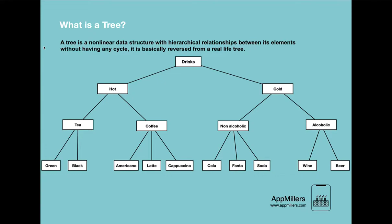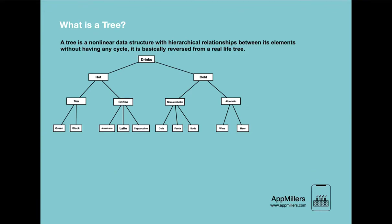Now let's see the common properties and observations from this diagram. The first property is that it's used to represent data in hierarchical form — every time we go one step down it becomes a more specialized form of its parent. For example, going down from hot drinks we see that tea is a specific type of hot drink, and soda is a specific type of non-alcoholic drink.